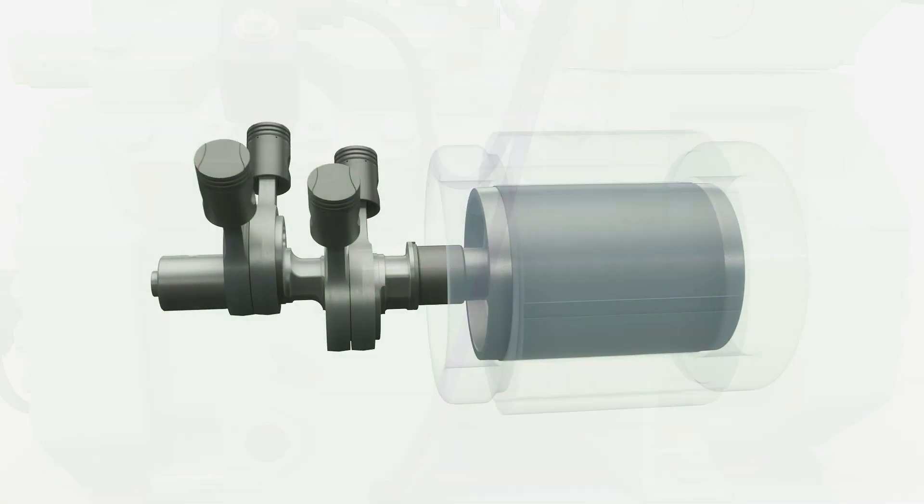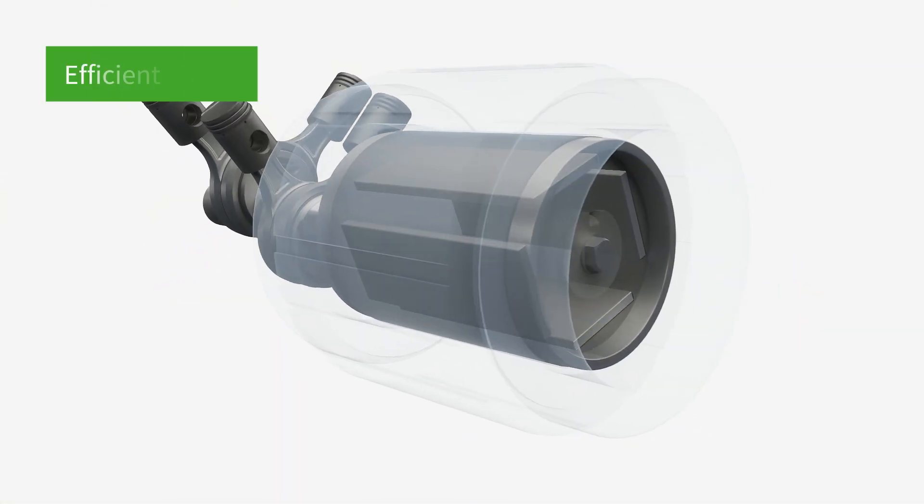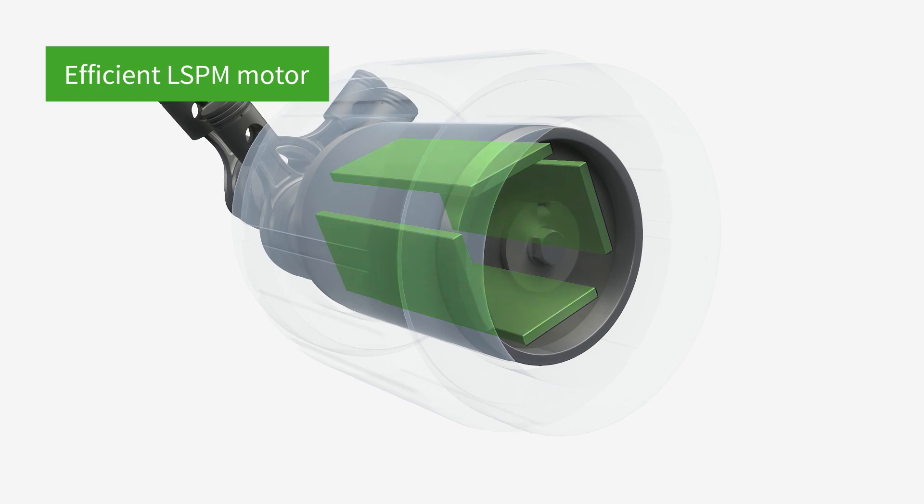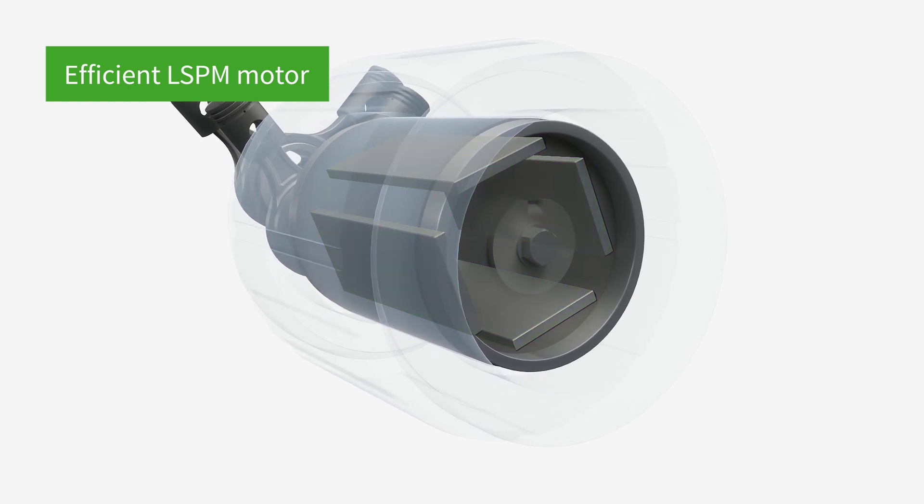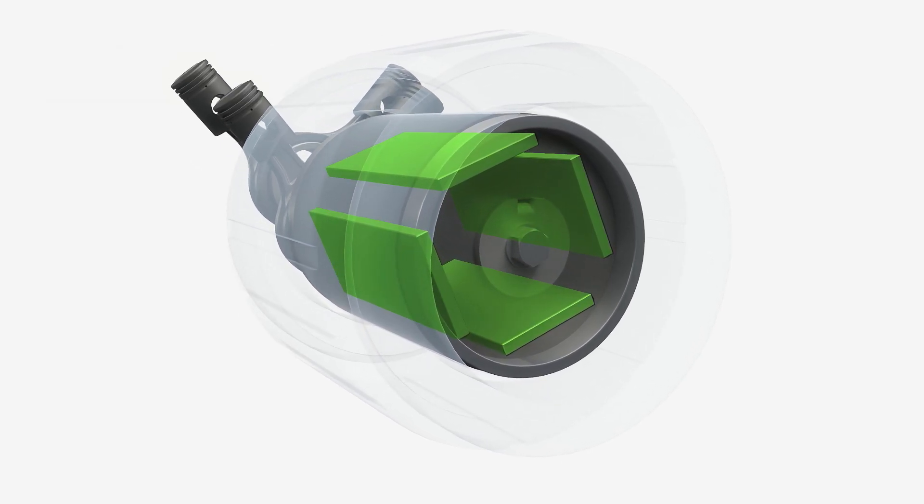The Bitsa LineStart permanent magnet LSPM motor improves motor efficiency with energy savings of 10% compared to previous Ecoline compressors.